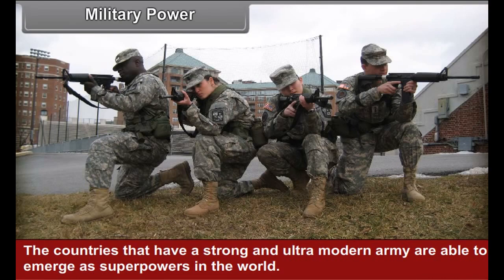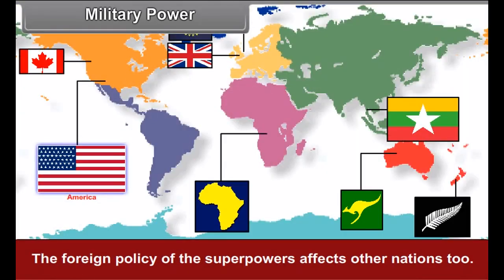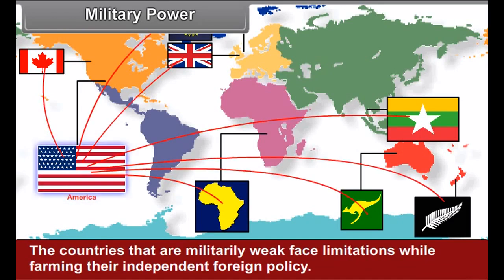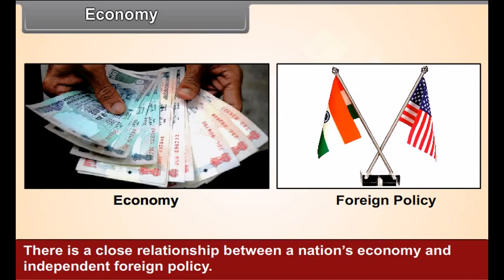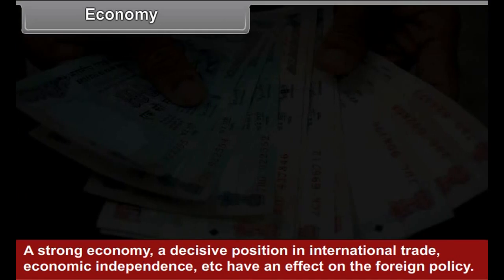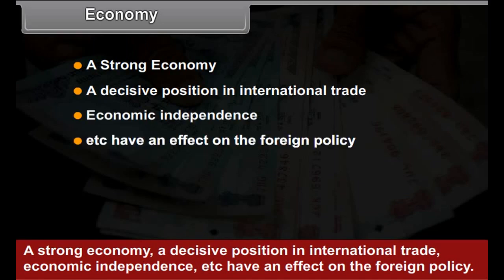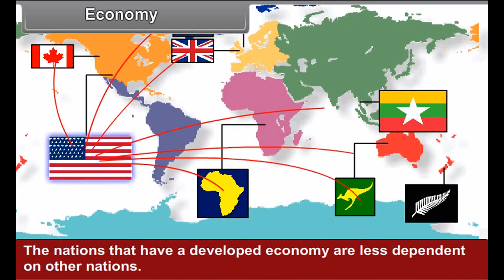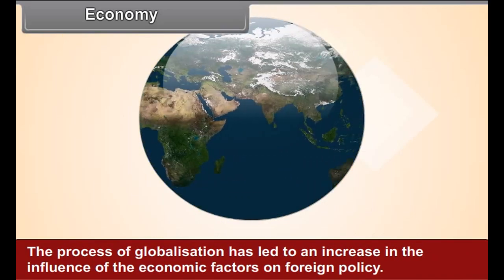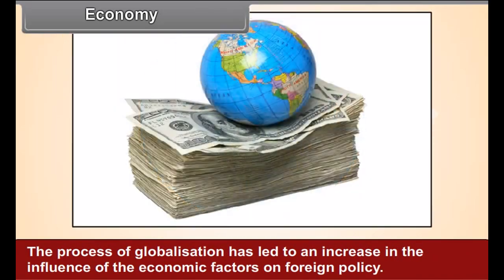Military Power: The countries that have a strong and ultra-modern army are able to emerge as superpowers in the world. The foreign policy of the superpowers affects other nations too. The countries that are militarily weak face limitations while framing their independent foreign policy. Economy: There is a close relationship between a nation's economy and independent foreign policy. A strong economy, a decisive position in international trade, and economic independence have an effect on the foreign policy. The nations that have a developed economy are less dependent on other nations. The process of globalization has led to an increase in the influence of economic factors on foreign policy.